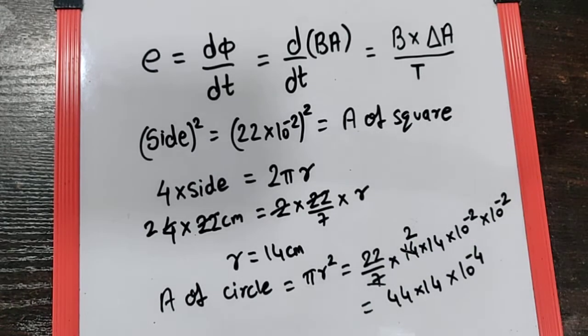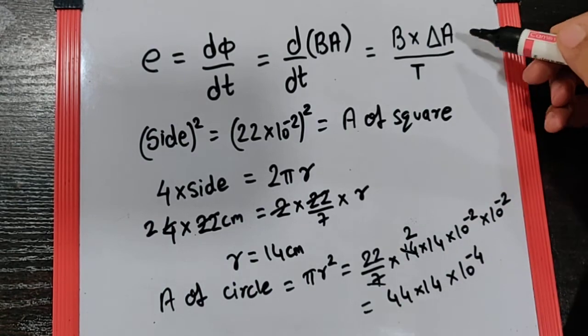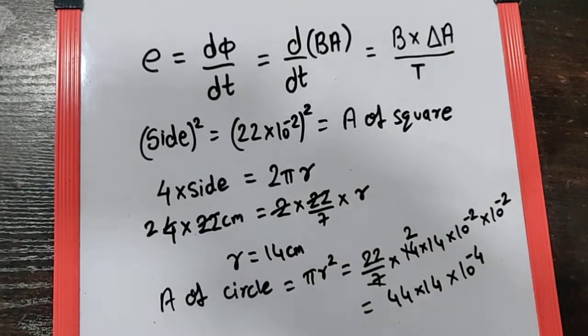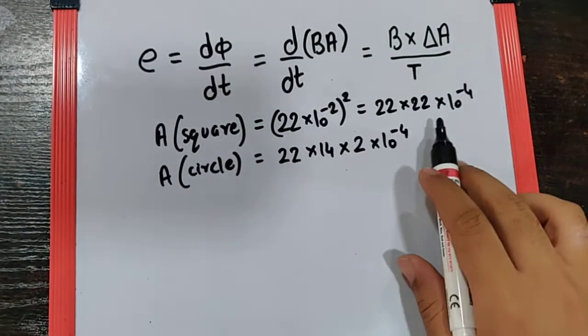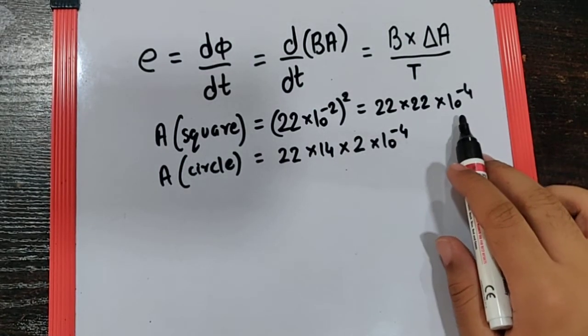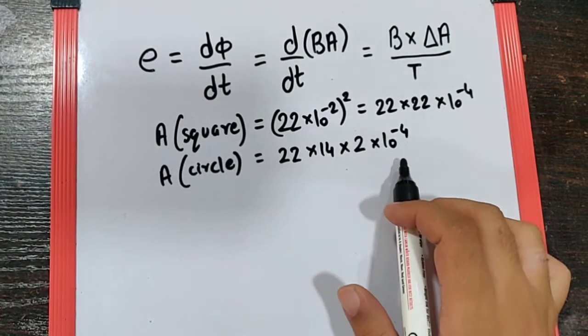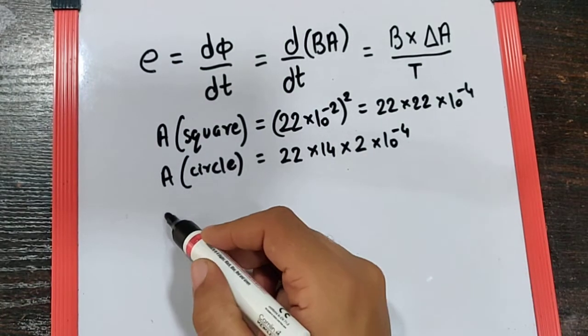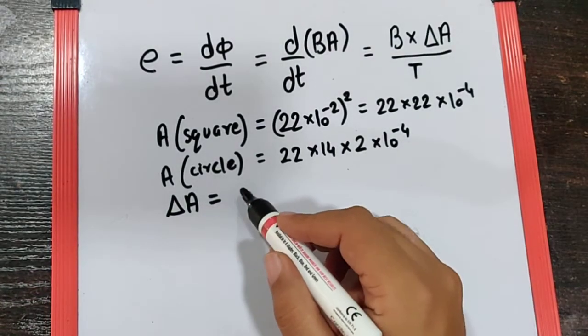So we have got the area of the square and we have got the area of the circle. Now we need to subtract them to find the change in area. So basically we have the area of the square as 22 into 22 into 10 raise to minus 4 and the area of the circle as 22 into 14 into 2 into 10 raise to minus 4. So now we can say the change in area is the final area minus the initial area.